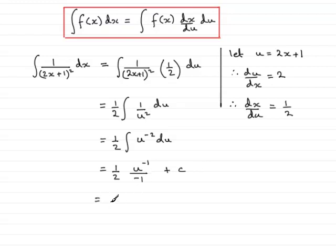Tidying this up, we now have minus a half, and u to the minus 1 is 1 over u, so that would be minus 1 over 2u, and then plus the c. And we know that u is the 2x plus 1, so we just simply substitute it in, and finally that gives us minus 1 over 2 lots of 2x plus 1, OK, plus the constant of integration c.